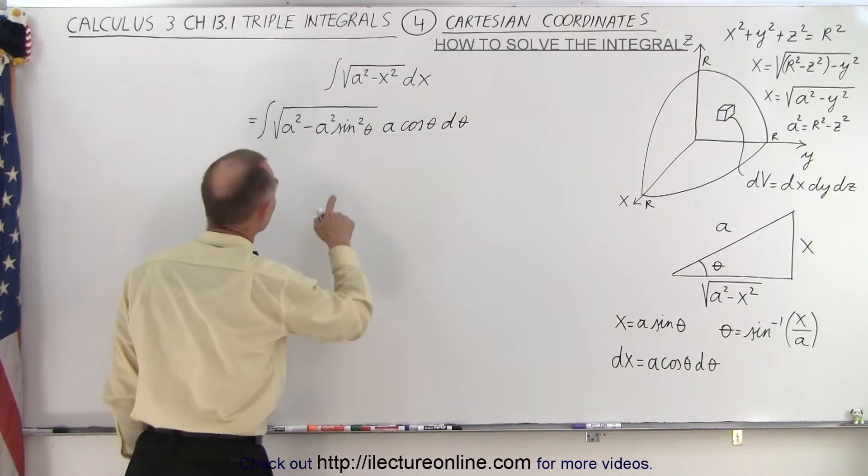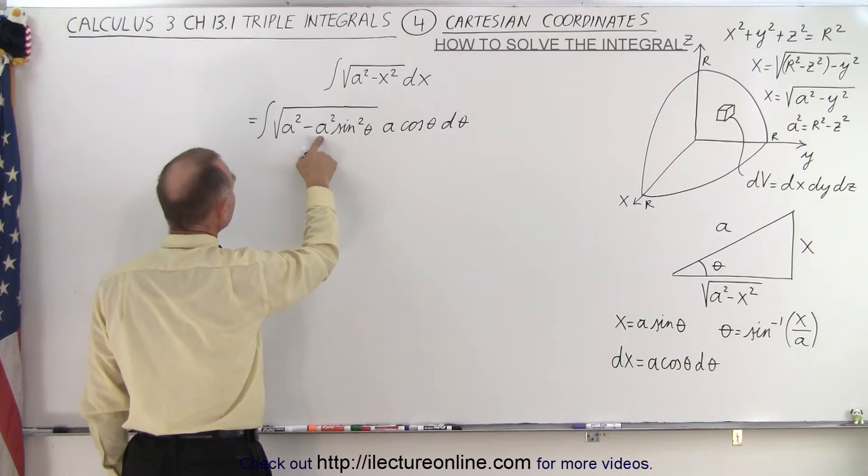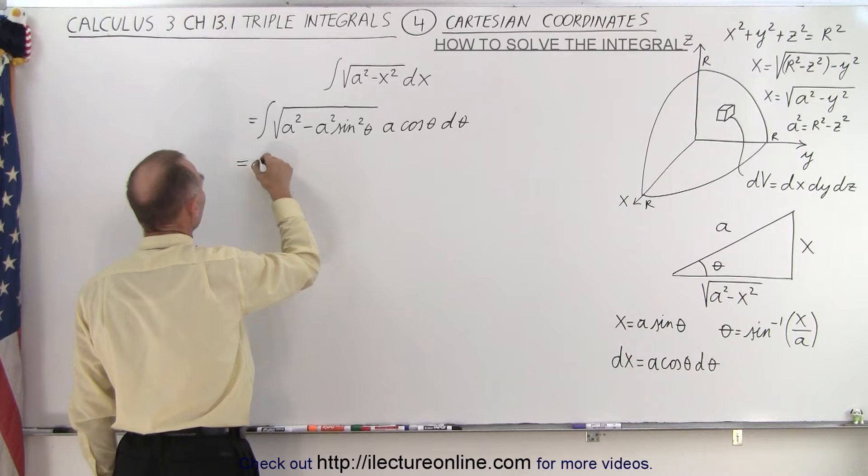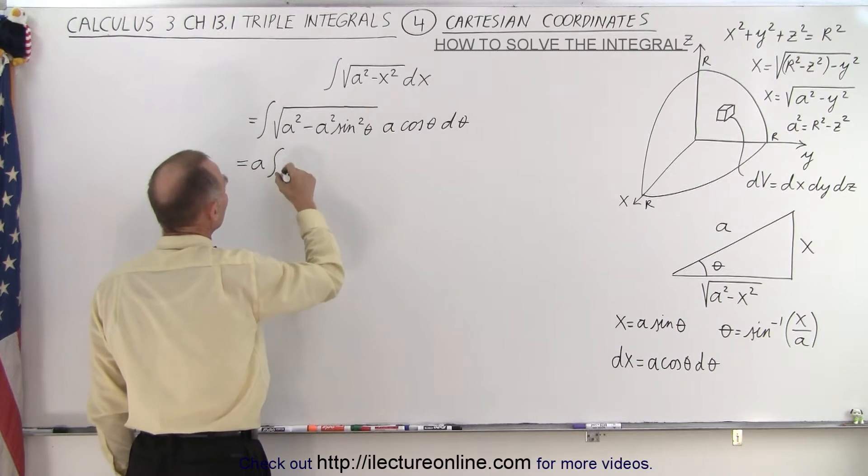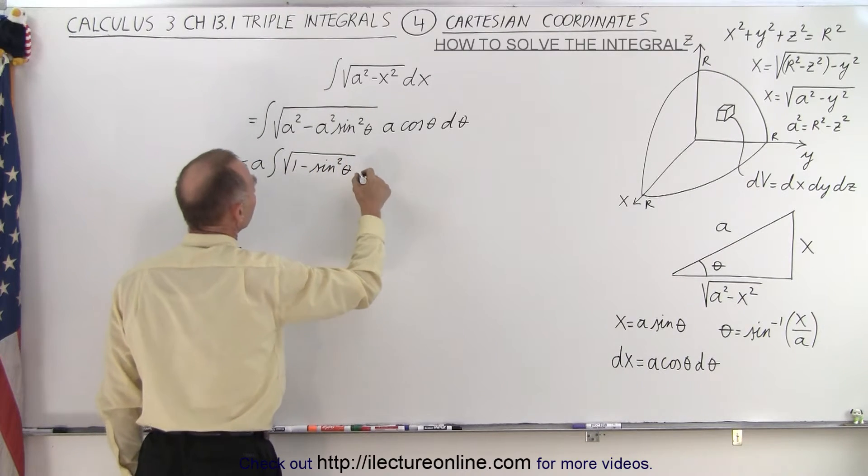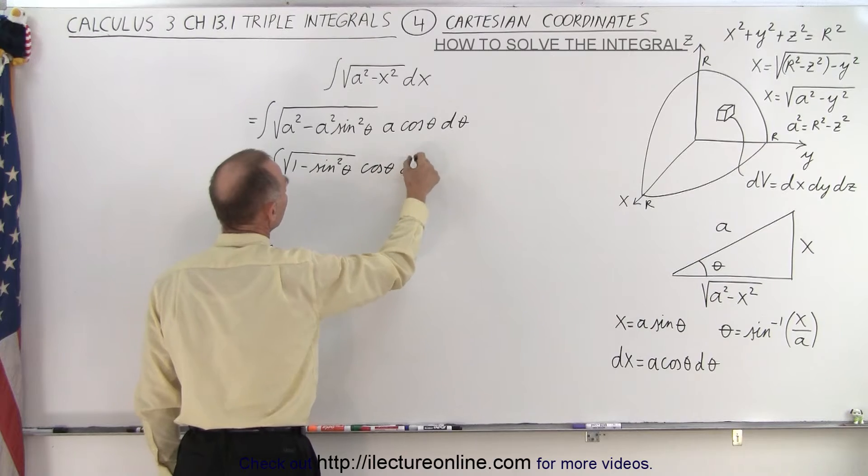Then what we have here is we can factor out an a squared, that becomes an a times this a that gives us an a squared outside the integral. And then we're left with the square root of 1 minus the sine squared of theta times the cosine of theta d theta.